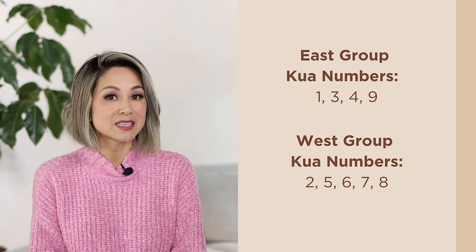Now that you have your personal kua number, you can determine which sector you fall in — the east group or the west group. East group kua numbers are 1, 3, 4, and 9. West group kua numbers are 2, 5, 6, 7, and 8.